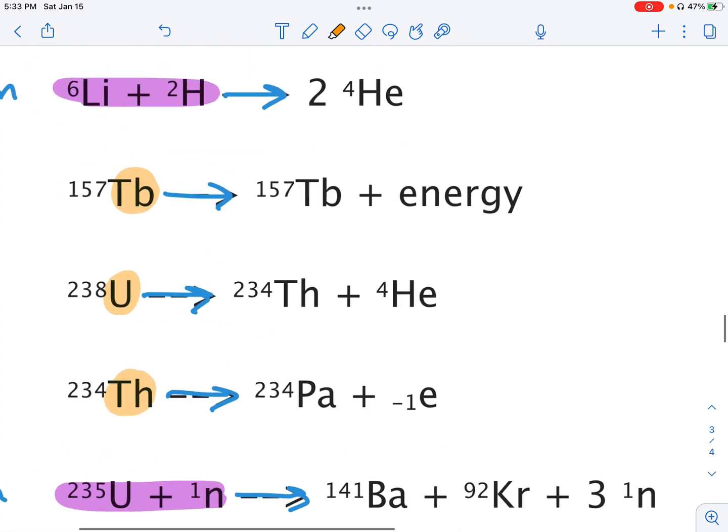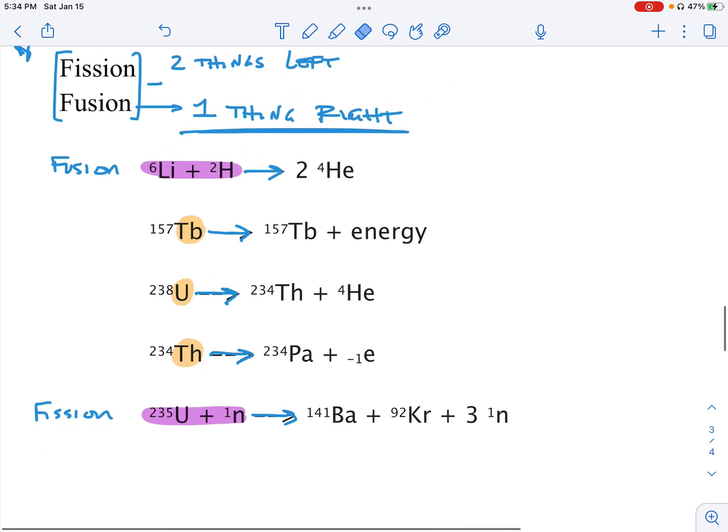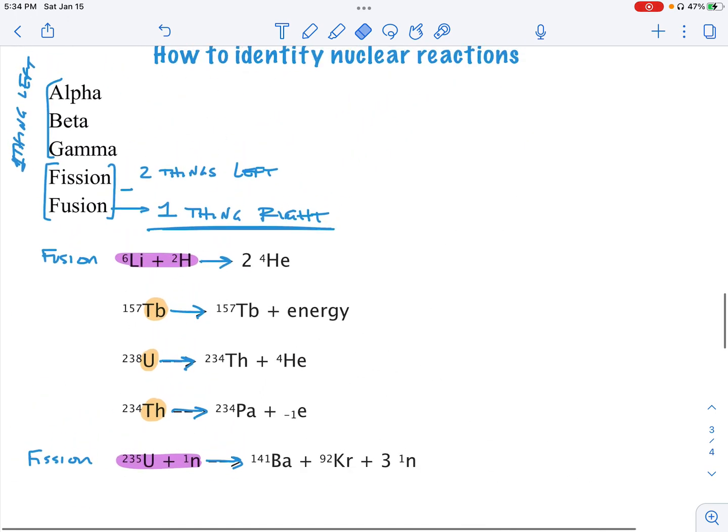The difference, obviously, is on the right-hand side. Let's zoom in here. I have element, element, element, and then I have energy, another element, and an electron. So now I've got to remember, what is the difference between all these things? Let's figure this thing out.